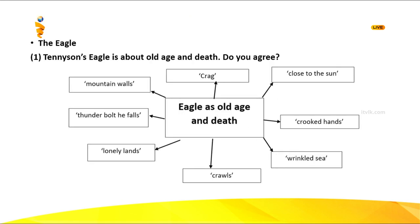Now I will move on to a sample question. I saw this in a recent paper: 'Tennyson's Eagle is about old age and death — do you agree?' Now you may wonder how to draw a mind map for this. What you have to do is write down the theme in a circle — 'eagle as old age and death.' You may say 'madam, we learned the eagle as nature or as an authority person' — but there are many themes under the eagle poem.